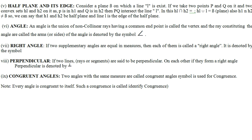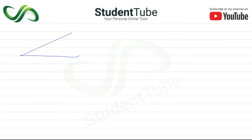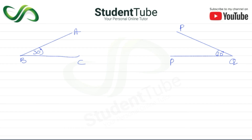Next, after perpendicular, we have congruent angles. Two angles with the same measure are called congruent angles. So we have two angles: angle ABC equals 30 degrees and angle PQR equals 30 degrees. Because both angles are 30 degrees, we can say they are congruent angles.